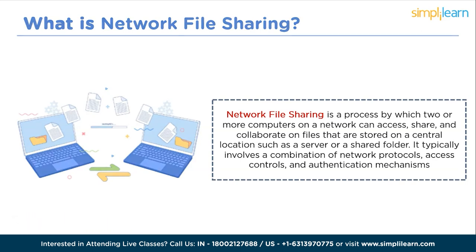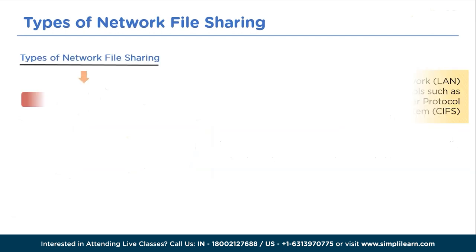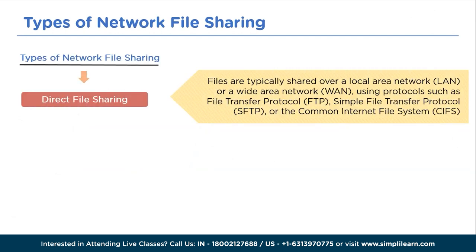There are two main types of network file sharing: direct file sharing and distributed file sharing. Direct file sharing is a method of sharing files between two or more computers over a network without the use of a dedicated server or storage device. Files are typically shared over a LAN or WAN using protocols such as FTP, SFTP, or CIFS (Common Internet File System).